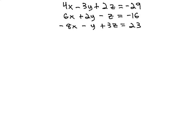In this video, we're going to solve the system of equations 4x minus 3y plus 2z equals negative 29, 6x plus 2y minus z equals negative 16, and negative 8x minus y plus 3z equals 23.